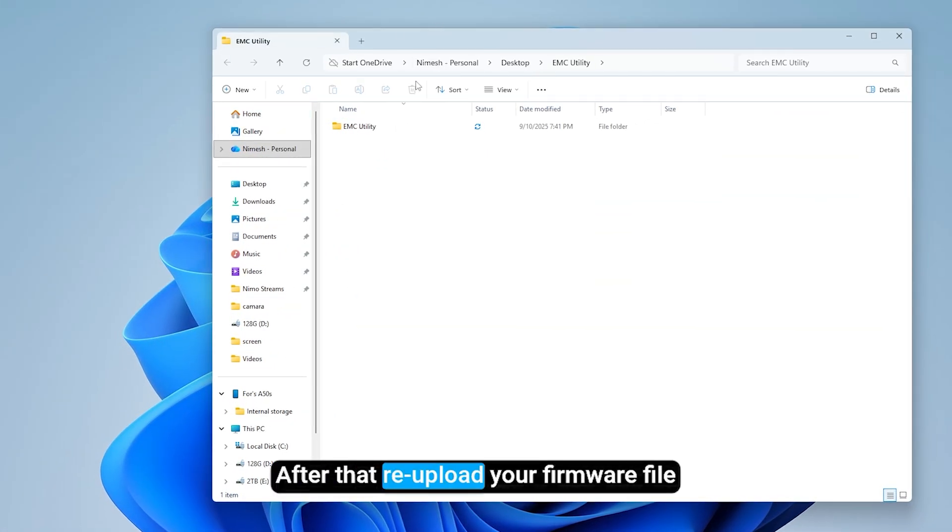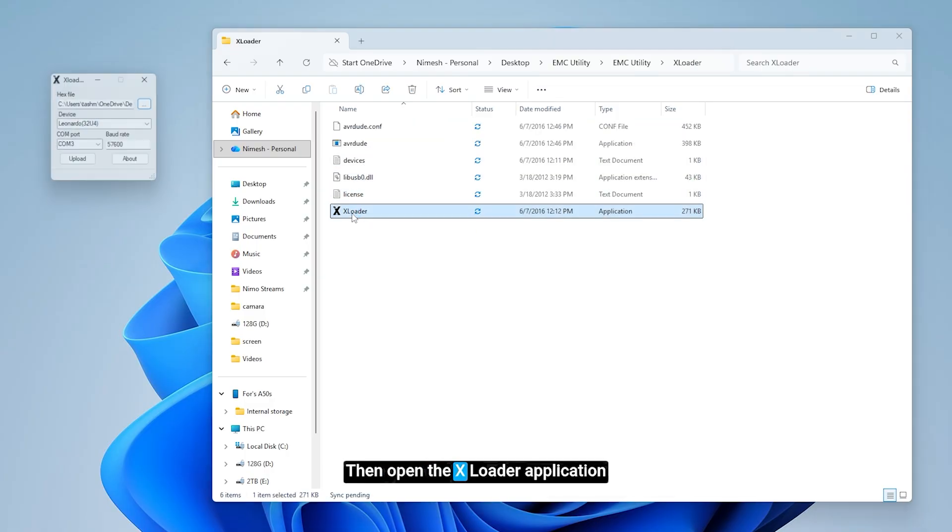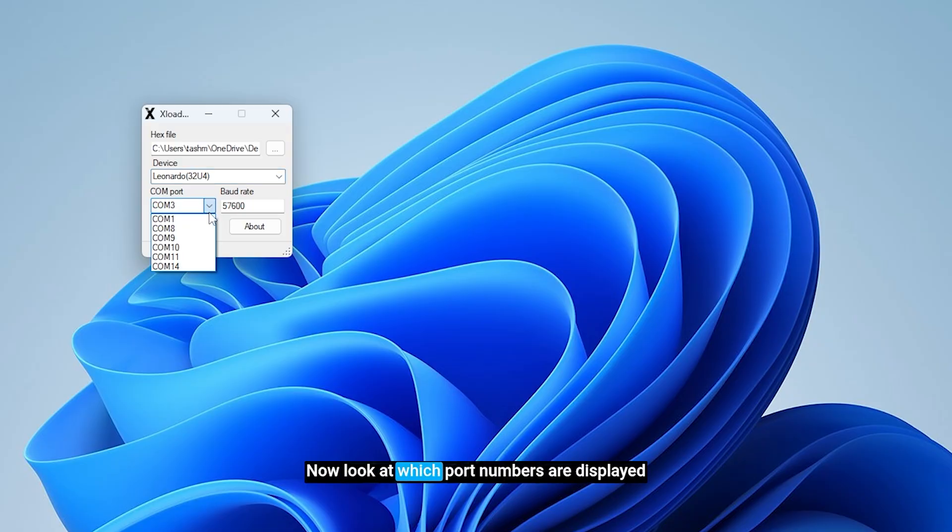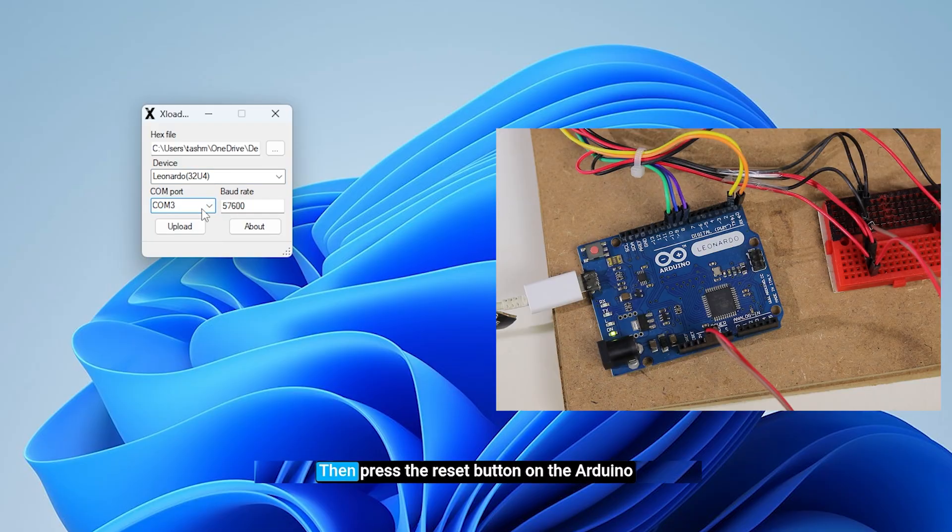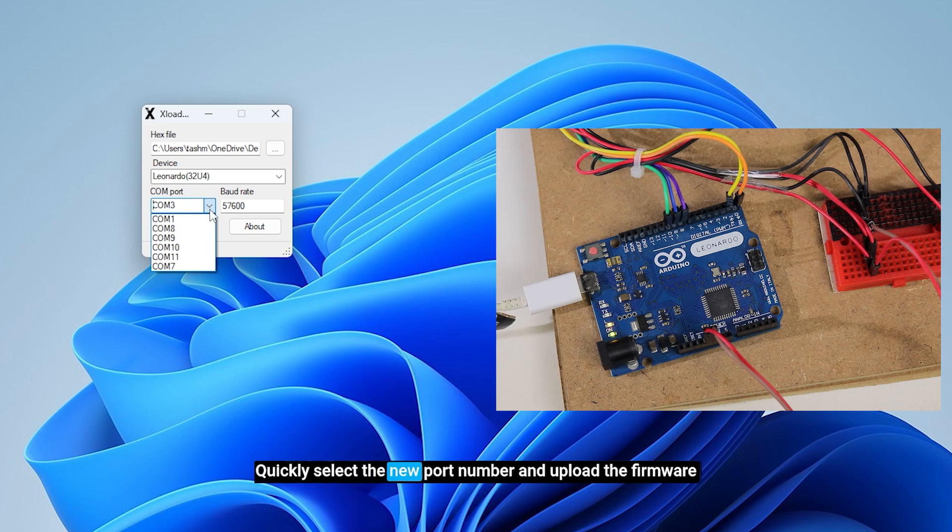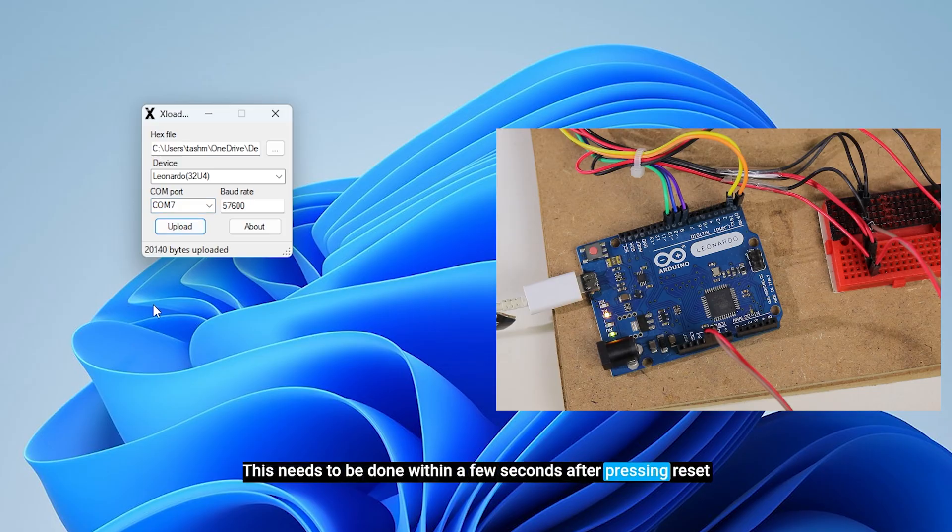After that, re-upload your firmware file. Open the xLoader application. Choose the device type as Leonardo. Look at which port numbers are displayed, then press the Reset button on the Arduino. Quickly select the new port number and upload the firmware. This needs to be done within a few seconds after pressing Reset.